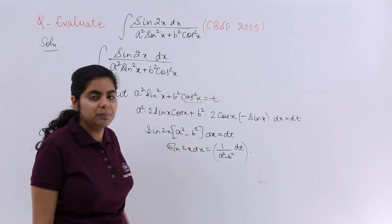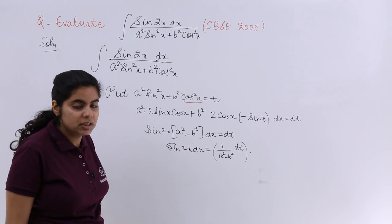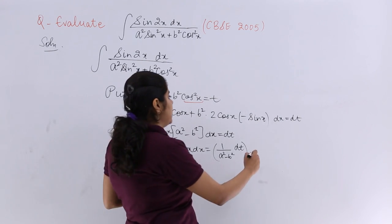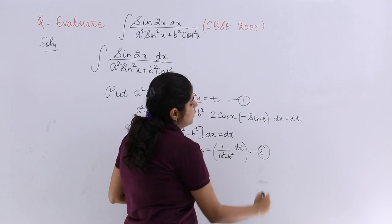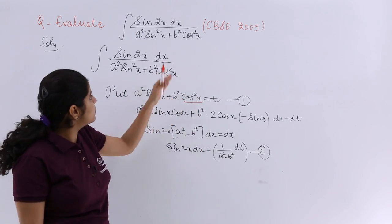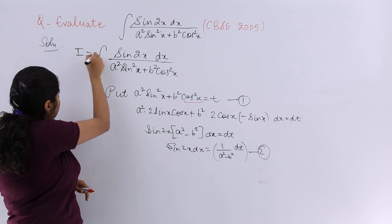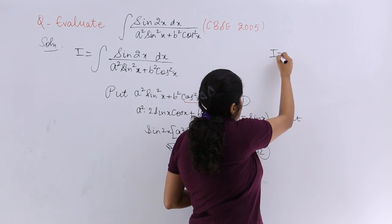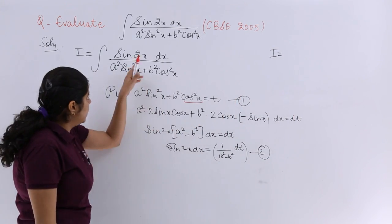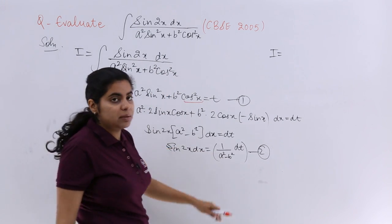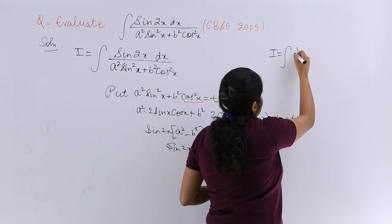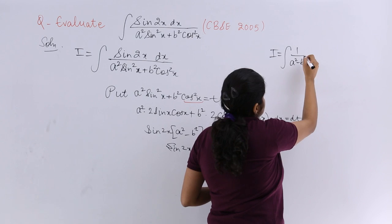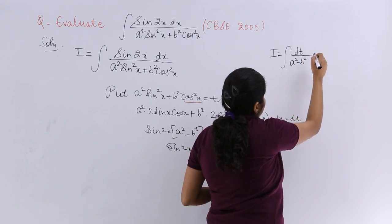Or even you can remove the bracket as well. Better you remove the bracket. That means we have obtained something. If this is my equation number 1, then this is my equation number 2. And I can substitute in I equals this. I is integral. So let me make it more clear. I = ∫sin 2x dx is nothing but ∫1/(a² - b²) dt.